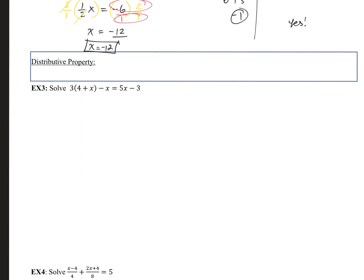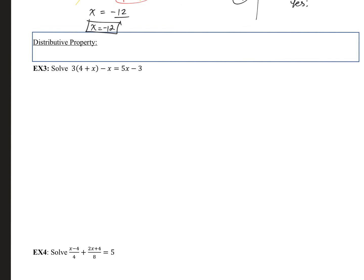Now let's look at a new property called the distributive property. If you have some number times items in parentheses, you can take that number and multiply it to each of the other terms individually — a(c ± n) becomes a·c ± a·n. You can distribute into each term inside the parentheses.